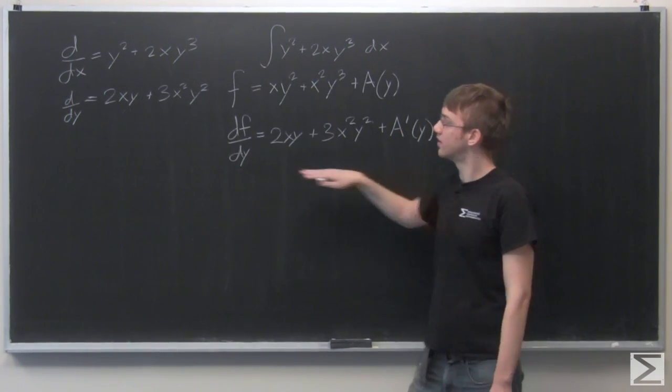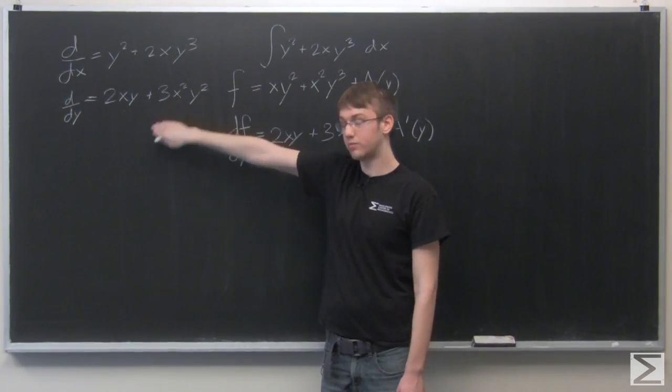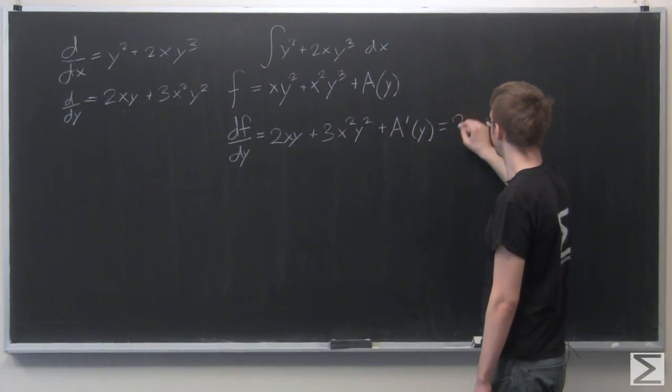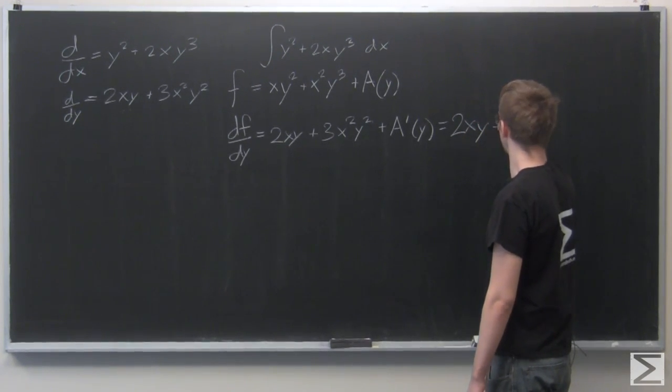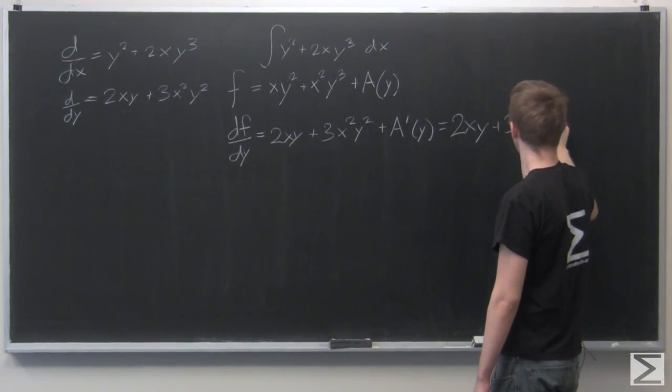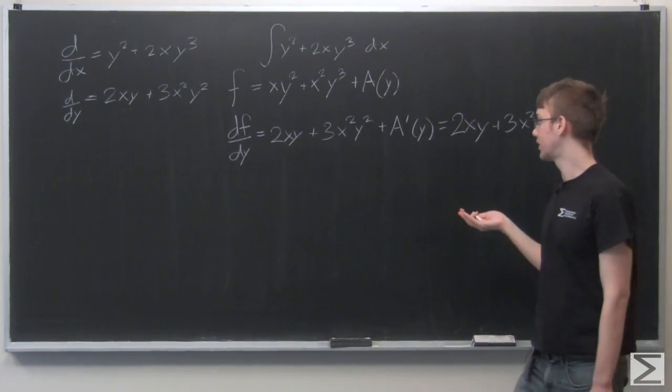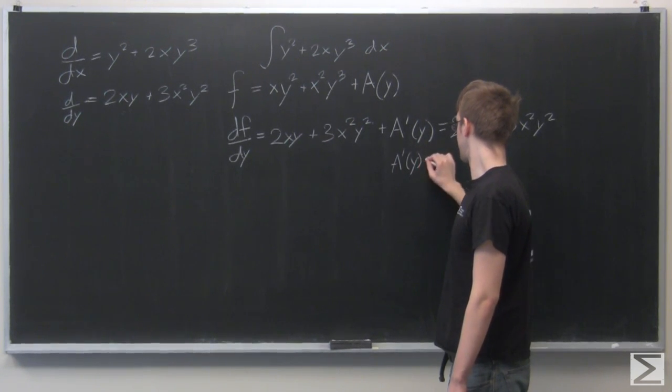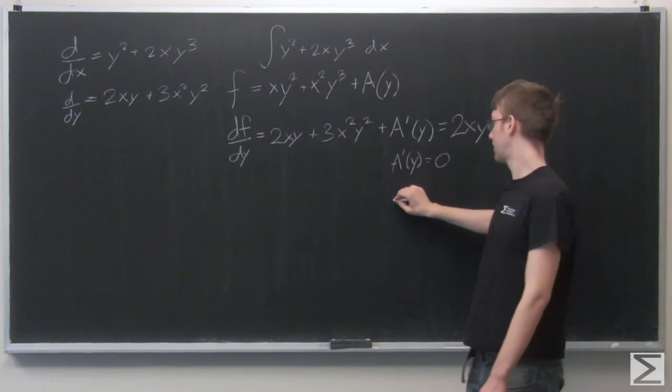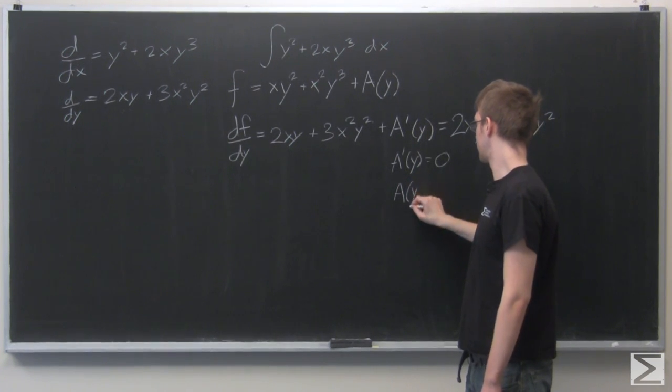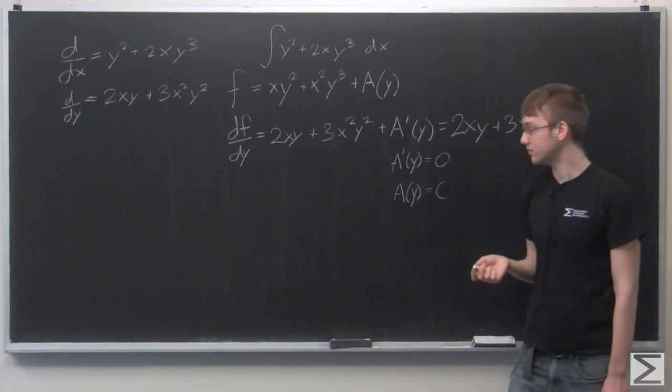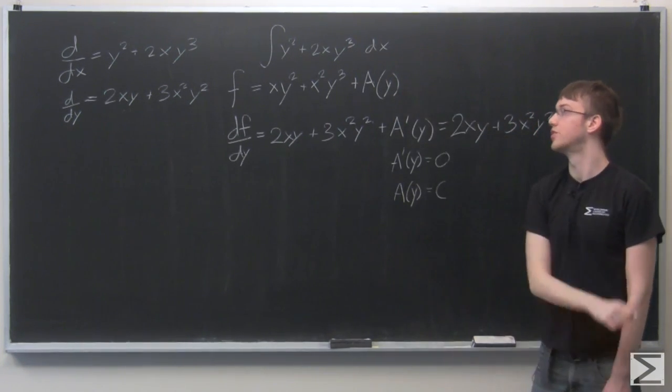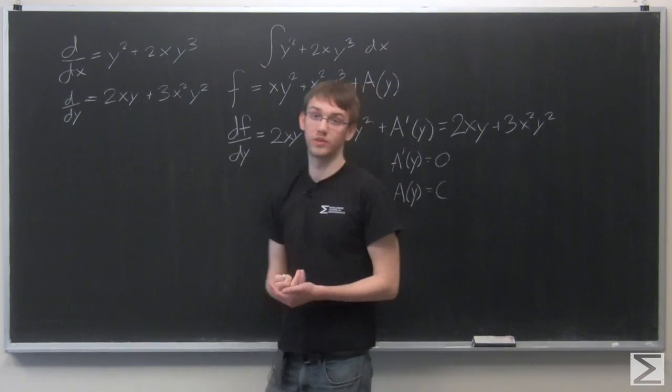Now if we set this equation equal to the j component that we had before, we can see that they're almost identical, except for this one term right here. So just to solve this equation, we know that a prime of y is equal to 0. Therefore, a of y is just equal to a constant. Now that we have a of y, we can plug that back into our equation for f and get our answer for the potential function.